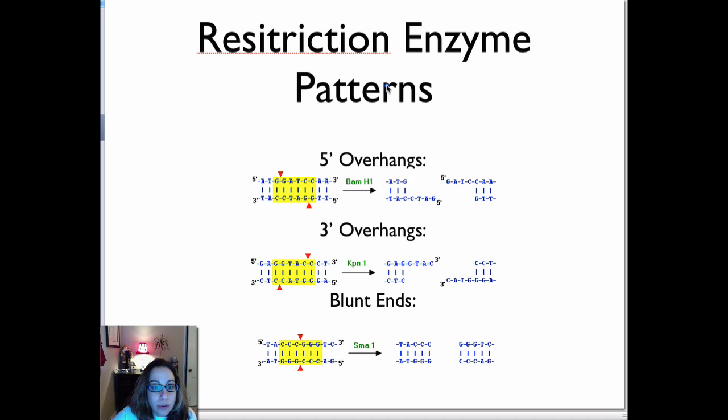So you can have restriction enzymes like this here, BAMH1, that will leave what's called a 5' overhang. The way it cuts, so this is BAMH1, it recognizes the sequence GGATCC, and it will always cut between the two Gs.